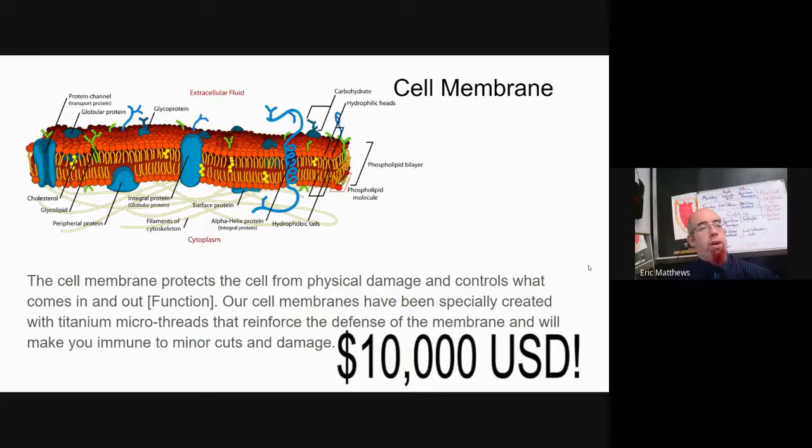So, for instance, this is like a page for a cell membrane, right? I got a nice, good picture of it that shows all the different bits and pieces. The name is up there in the upper right. Then down in the text, the cell membrane protects the cell from physical damage and controls what comes in and out. And then in the little bracket, the function. So there I highlighted for you where the function was. Now comes the sales pitch. Now comes the creative side, right?